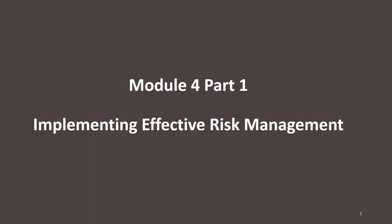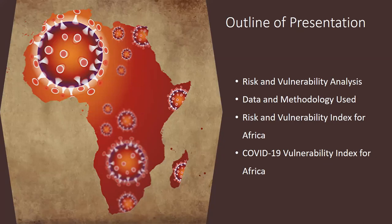Good morning and good afternoon. This is part one of module four on implementing effective risk management. Going through the outline of module four, we will have an overview first about the recent vulnerability analysis done for ECA during the period of COVID-19, at the start of the pandemic. We will look at recent vulnerability along with the COVID-19 vulnerability index for Africa, and the risk and vulnerability index for the region. This is the first part, covering data and methodology.